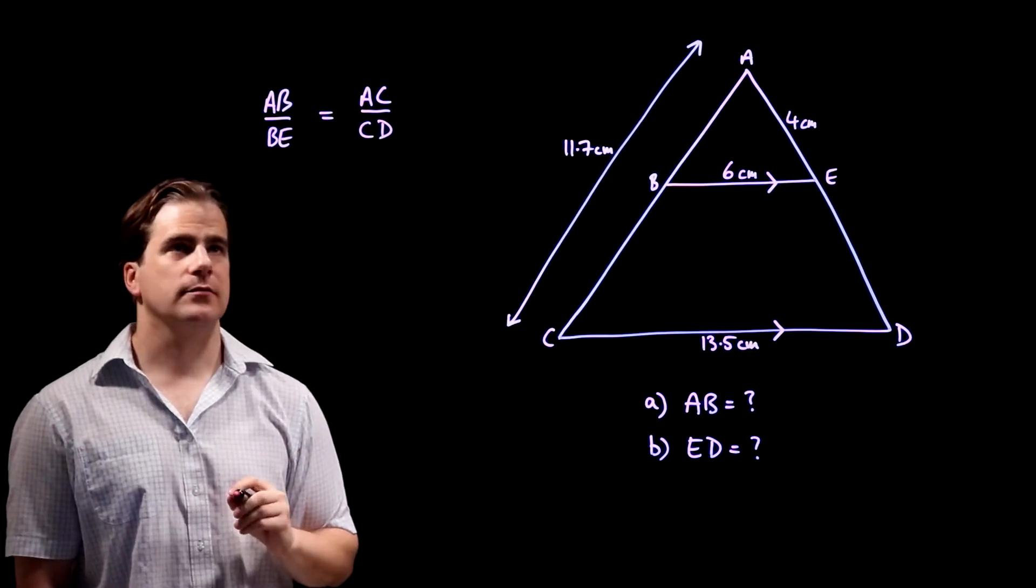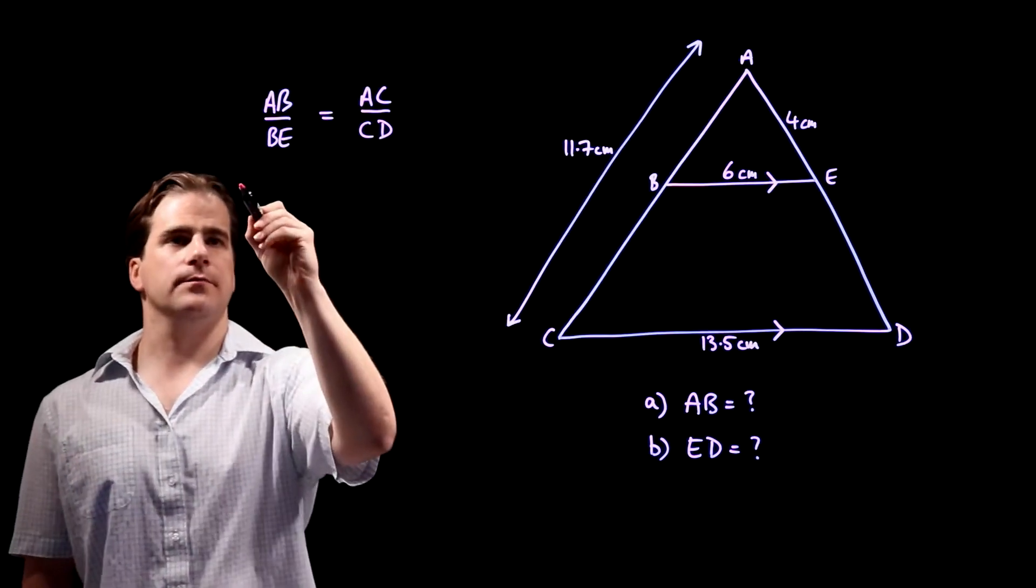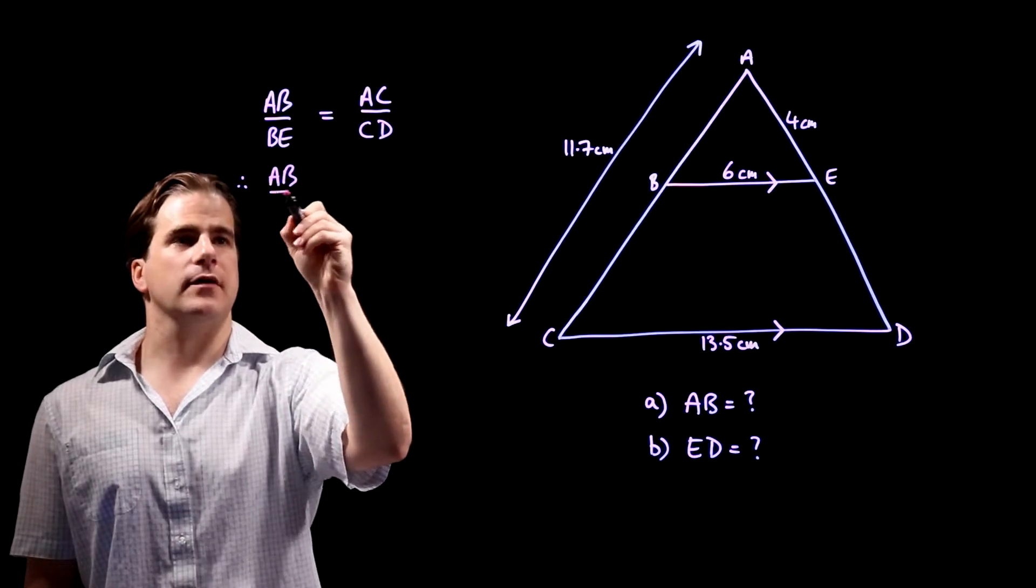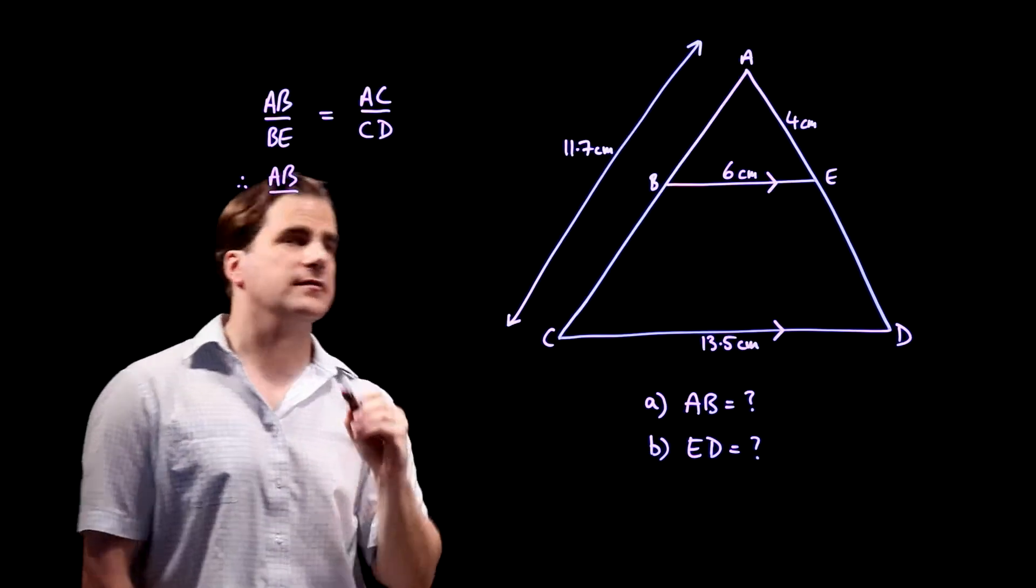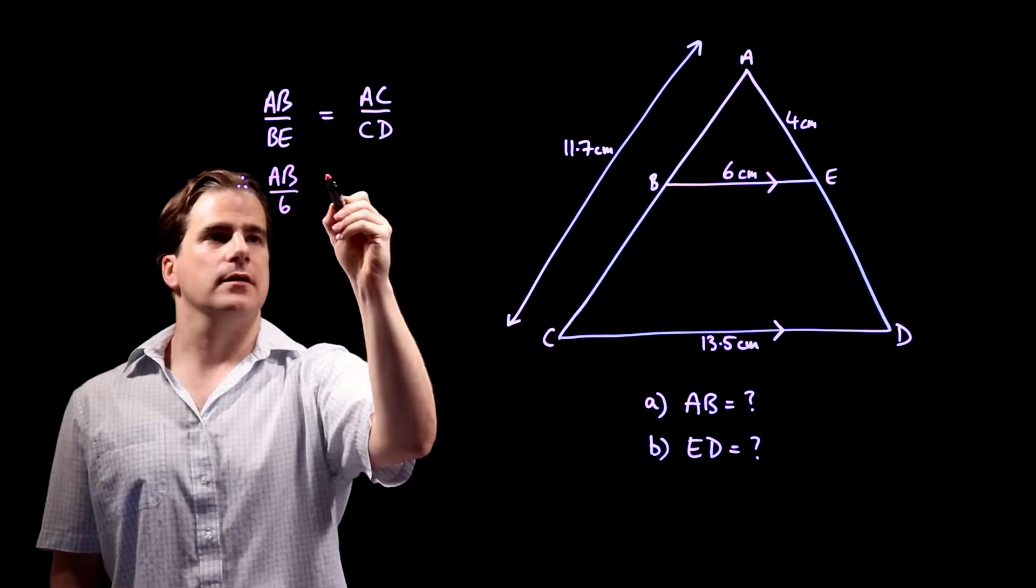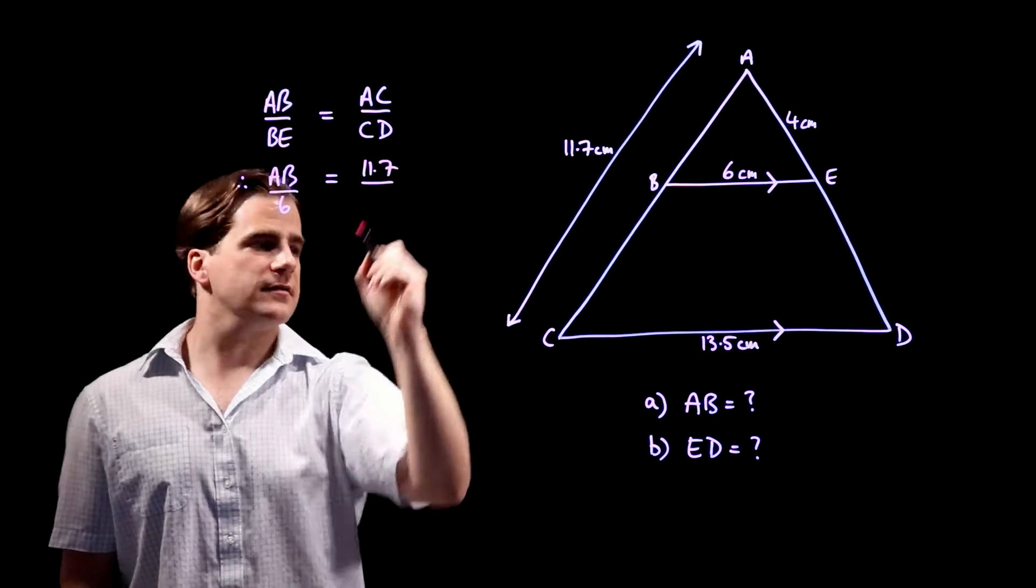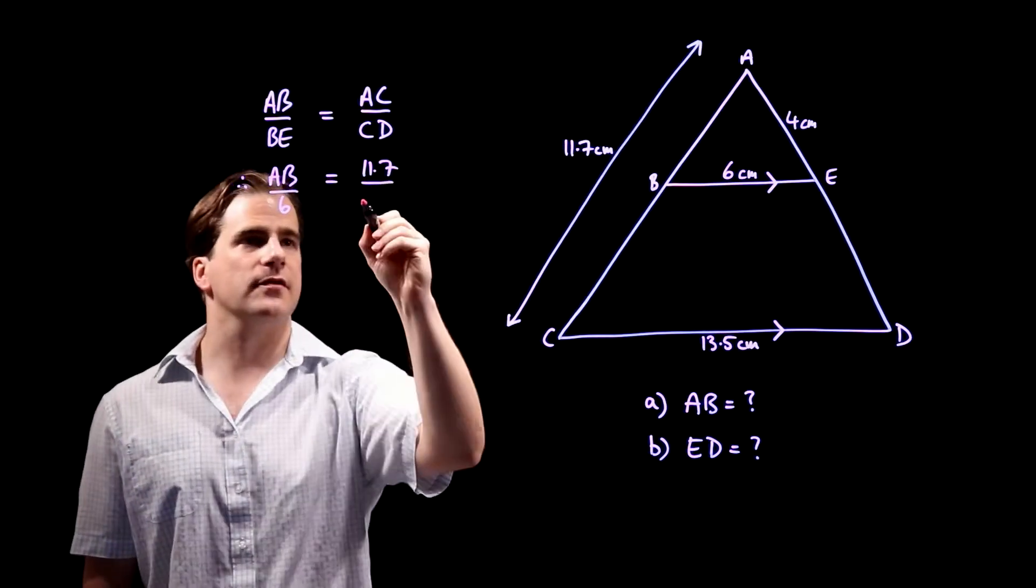So, therefore, AB divided by BE is 6, AC is 11.7 and CD is 13.5.